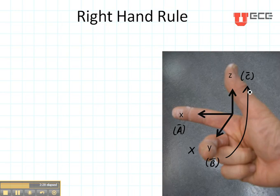A, B, and C. We can also write X cross Y is equal to Z or A cross B is equal to C.